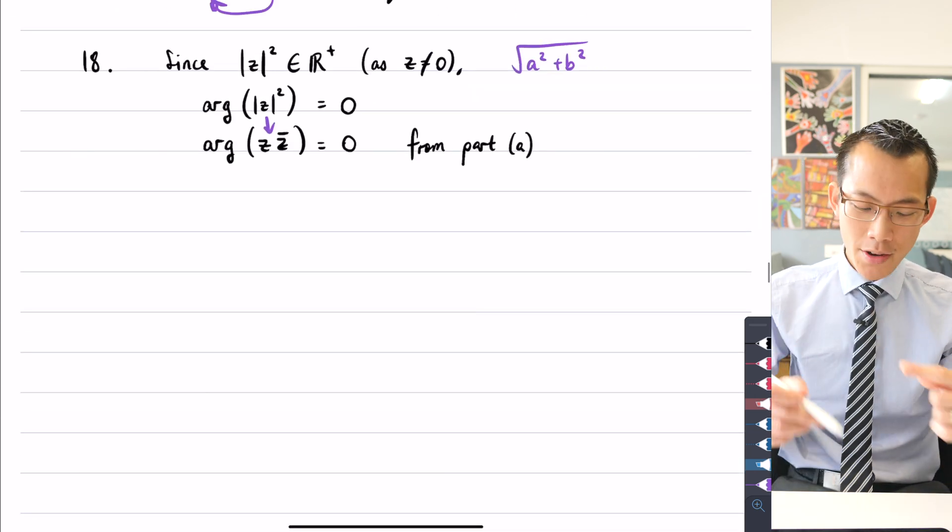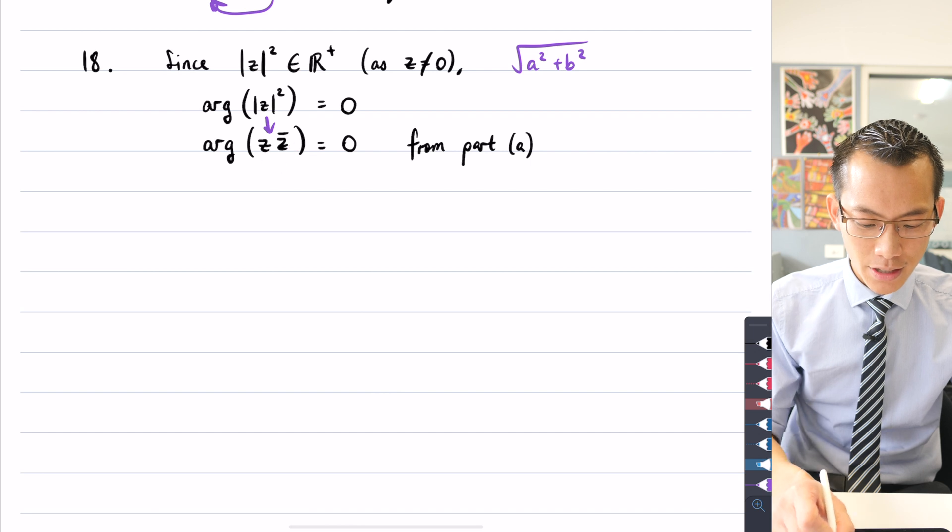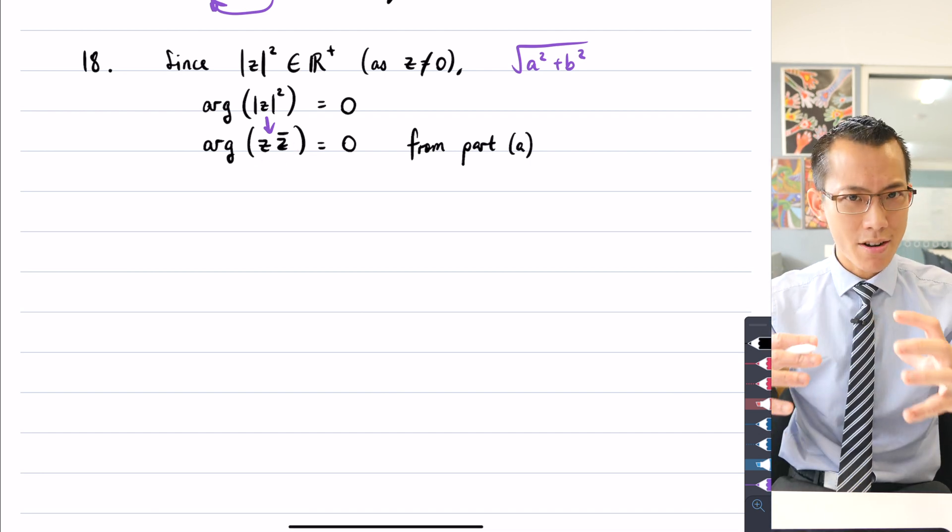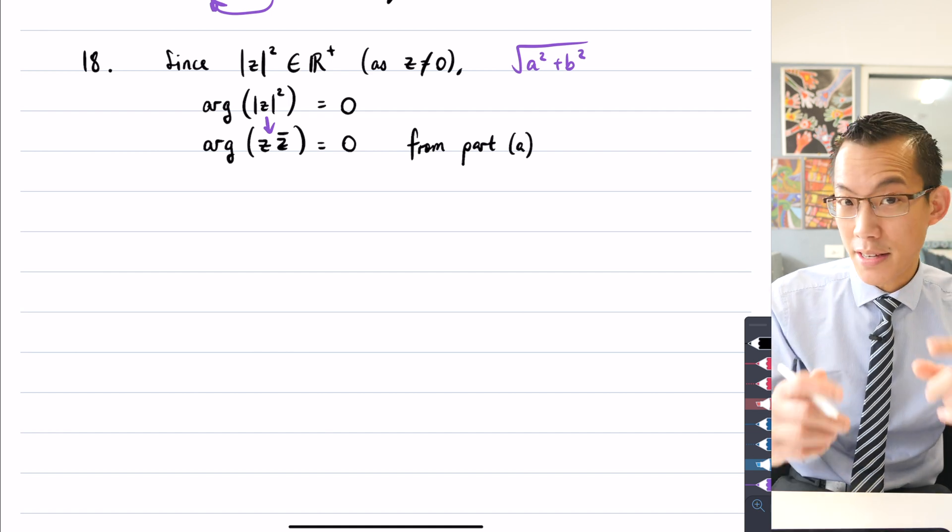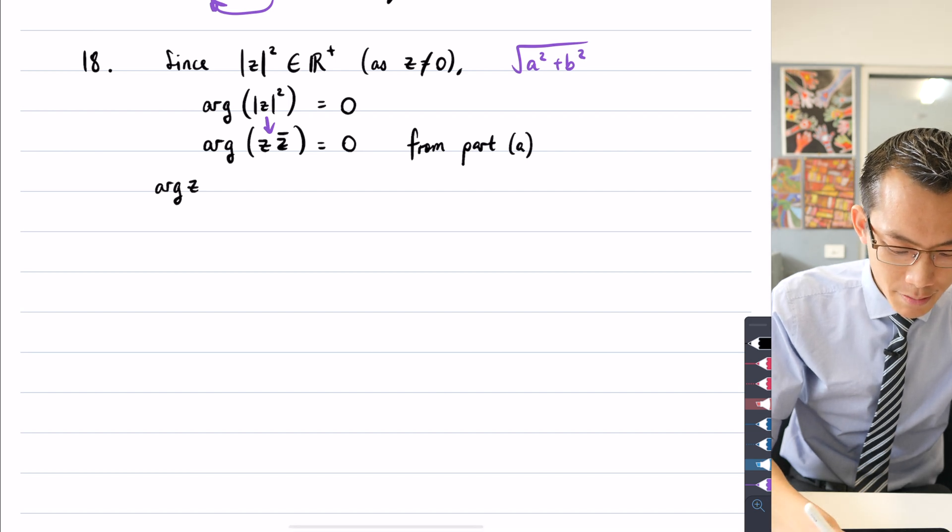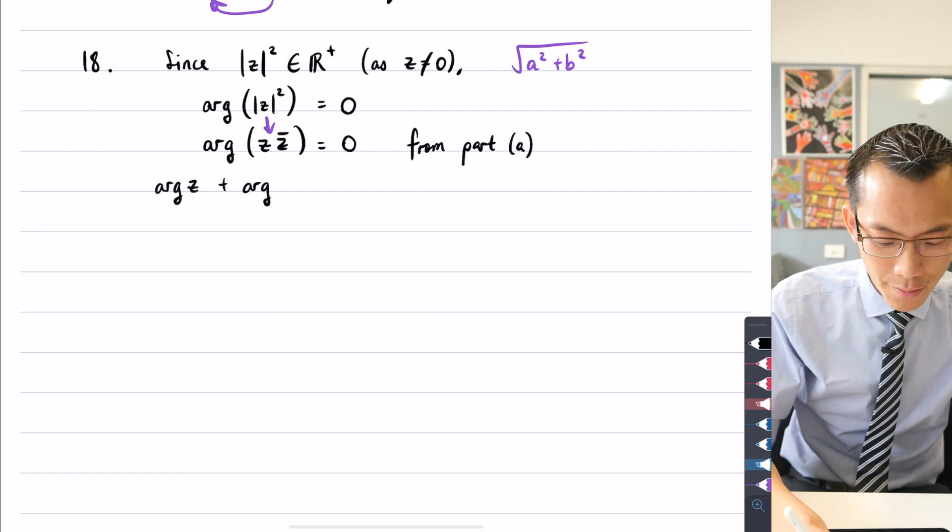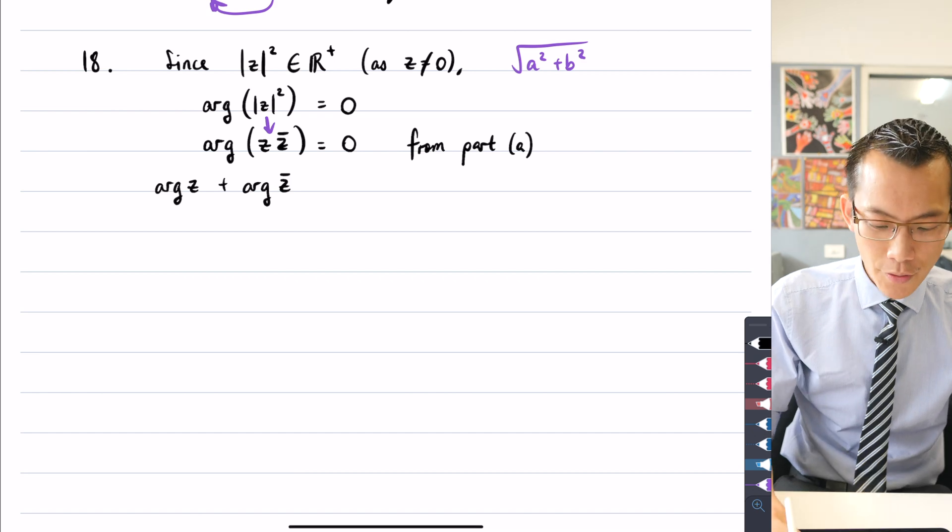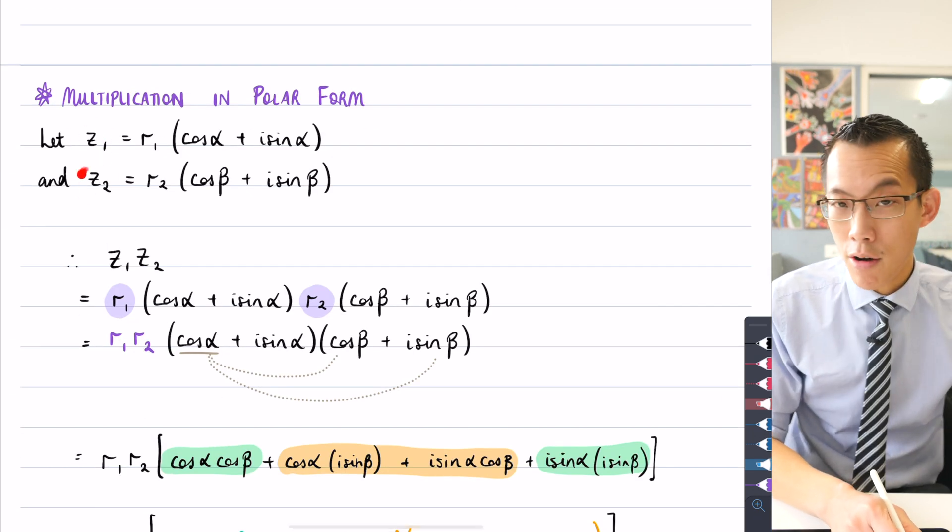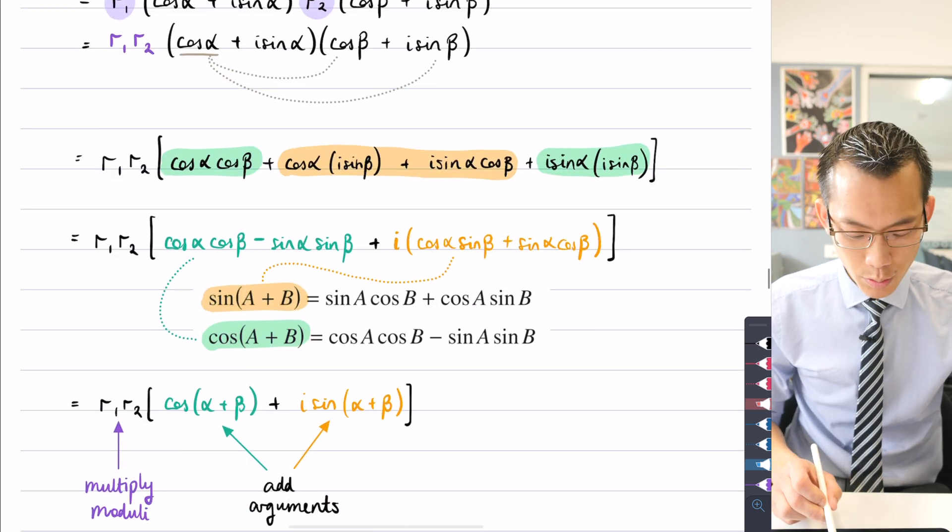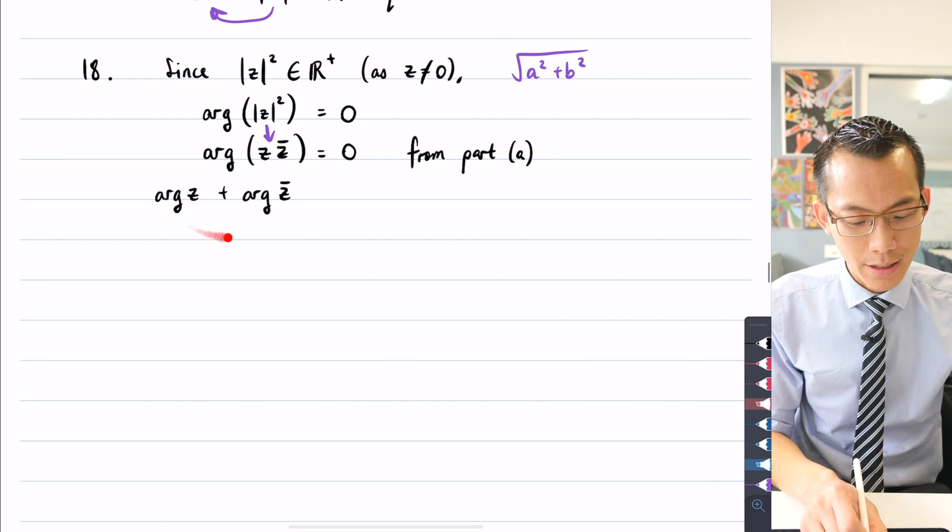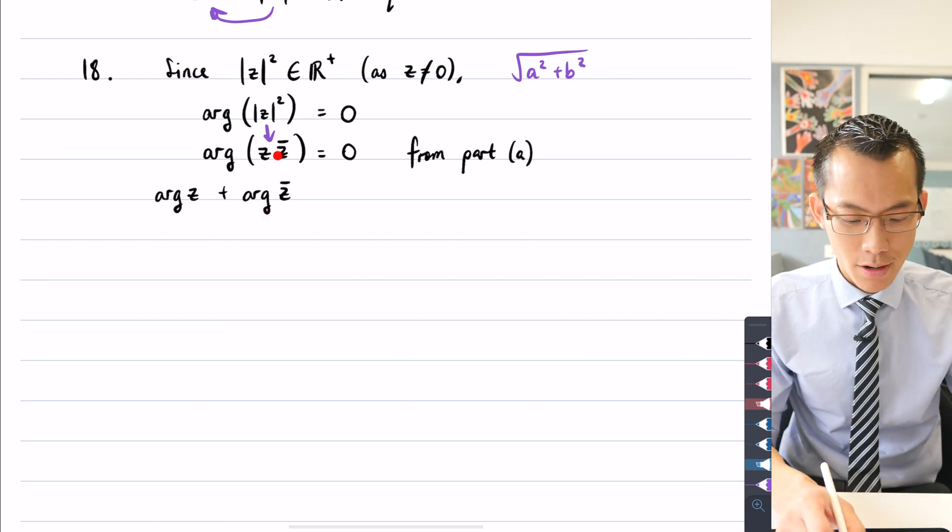So therefore I can kind of do this in reverse. You can see I've got this multiplication here, and so the argument of the product here is going to be the sum of the two arguments that I started with. That is arg of z plus arg of z bar. If you like, just going back to our proof, that's like this is the first number and this z bar will be my second number. So that's why you can see I'm going to add these arguments together, which is what I'm doing here to get the argument of the product. So I haven't done anything to the right hand side, it's still zero, but we're pretty much there, aren't we?